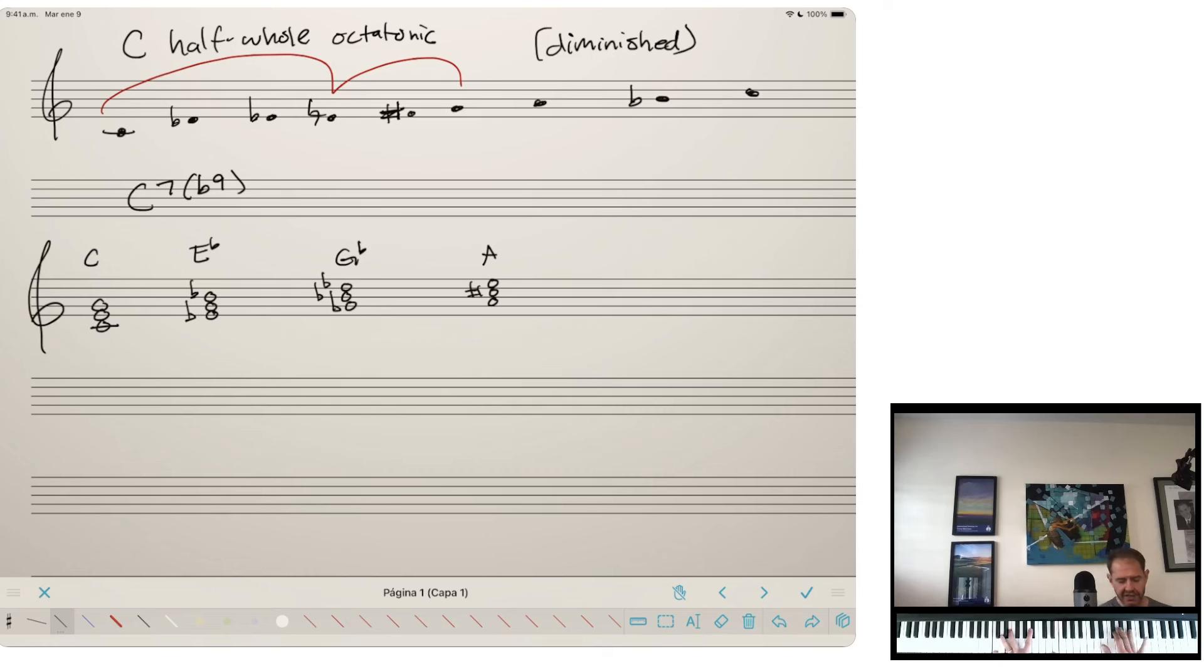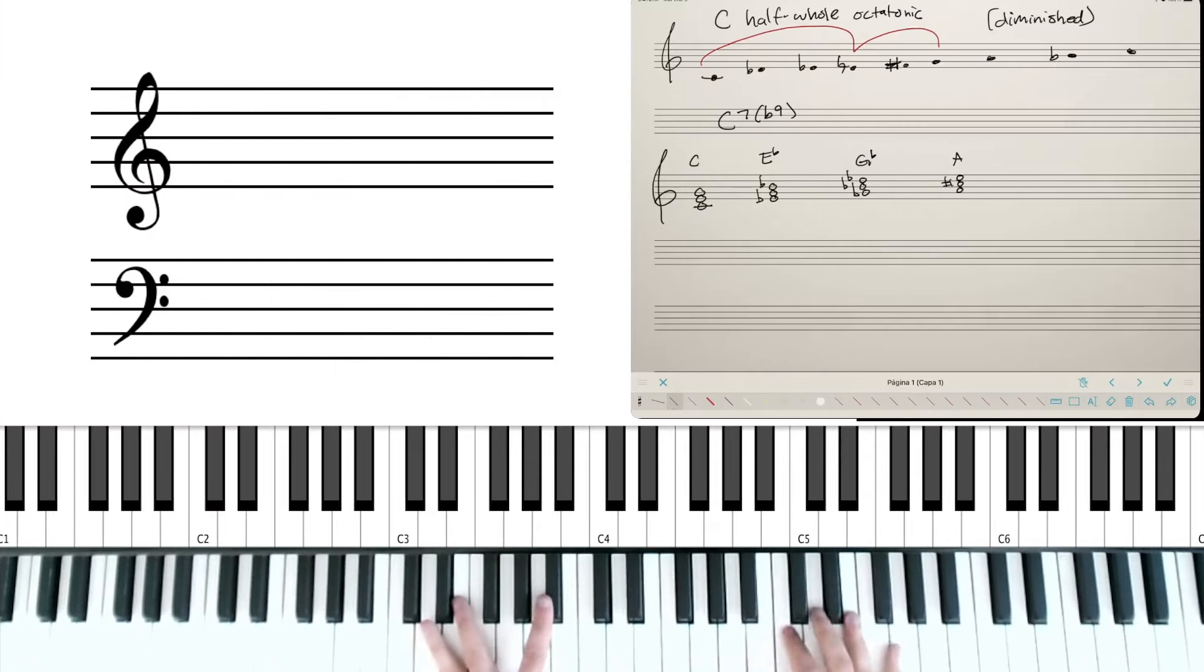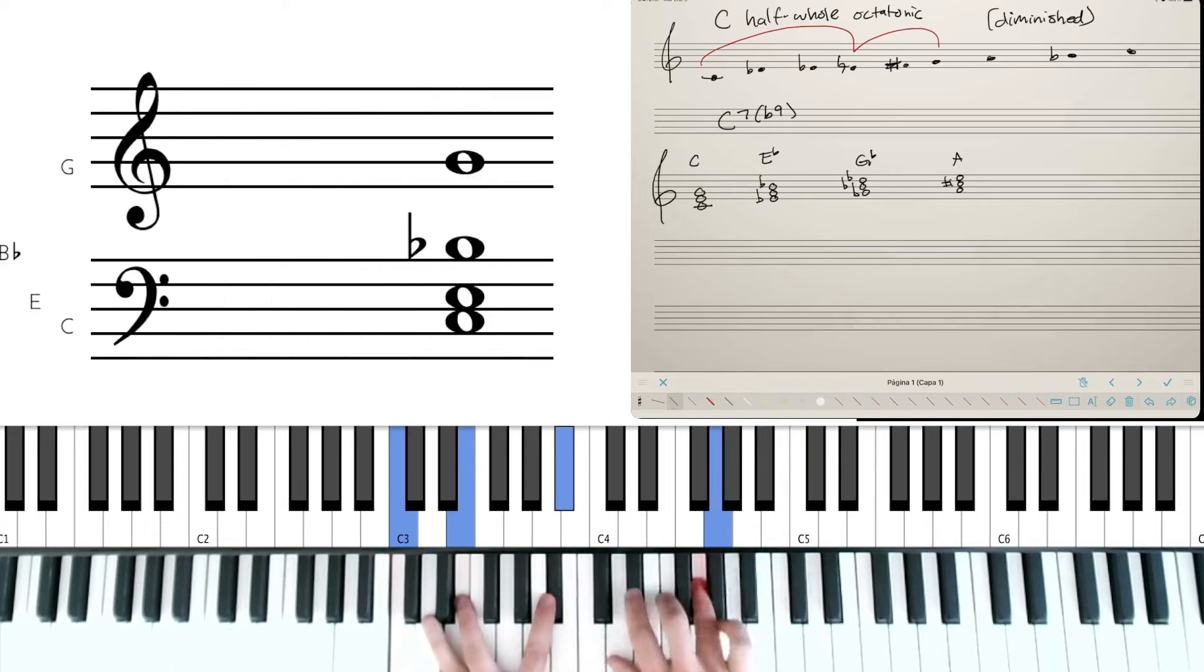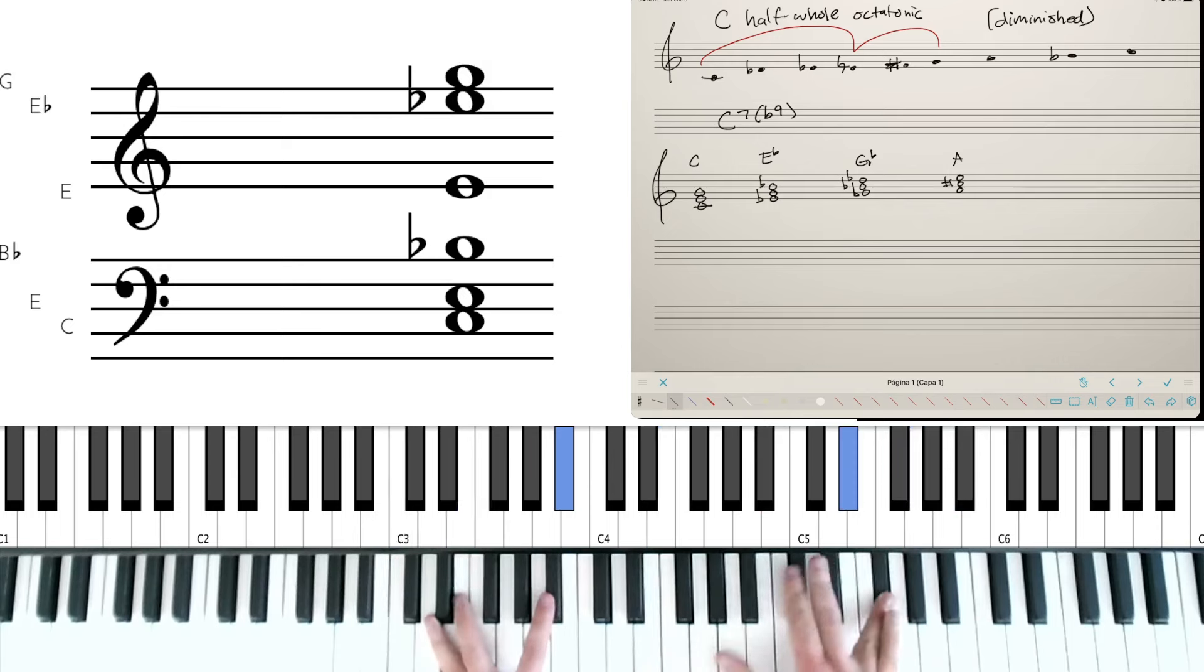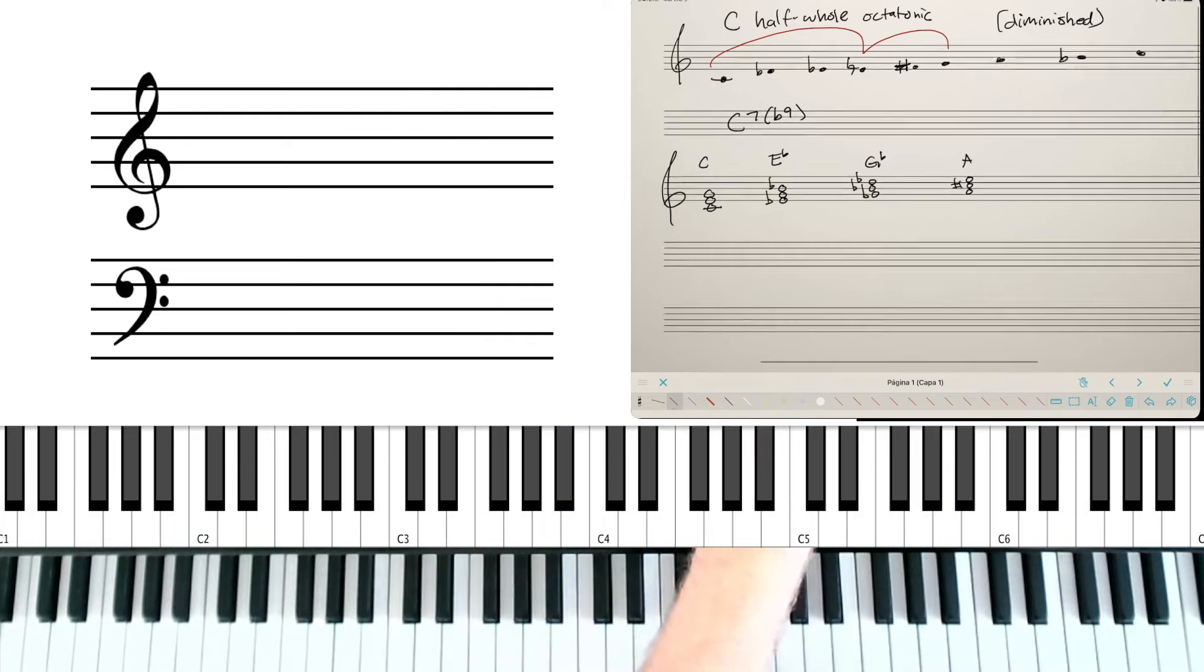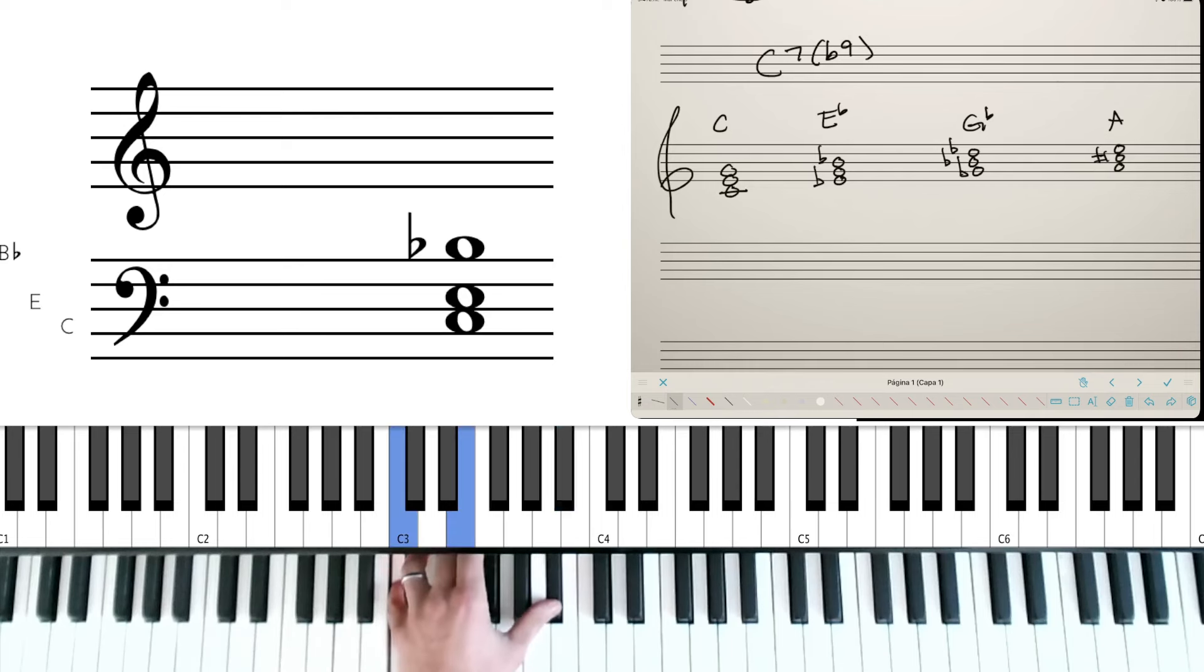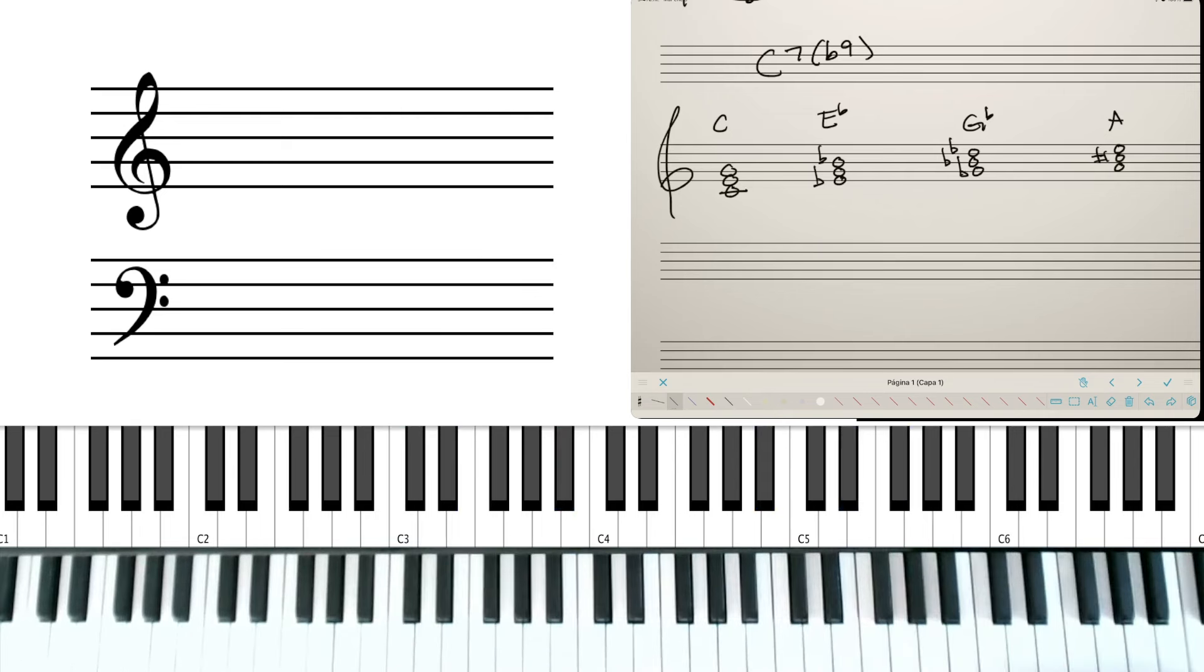Chick Corea uses this kind of thing all the time. Oh, that was such a crazy fail, but it gives me an opportunity to change camera angles. Right, he's very apt to use these different triads. So I'm playing a C7 in my left hand, and then using, for instance, an E flat chord in my right hand. Okay, so that's interesting.